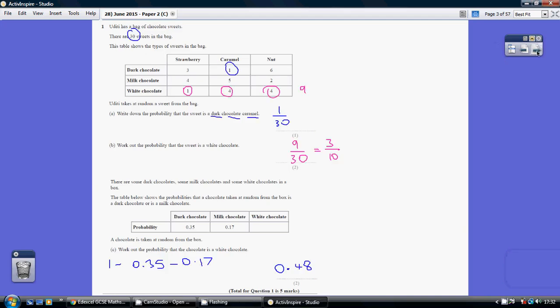Question 1. Write down the probability that the sweet is a dark chocolate caramel. The way the two-way table works, we've got the chocolate colour down here, the flavour across here, so dark chocolate is one, caramel is one of them.